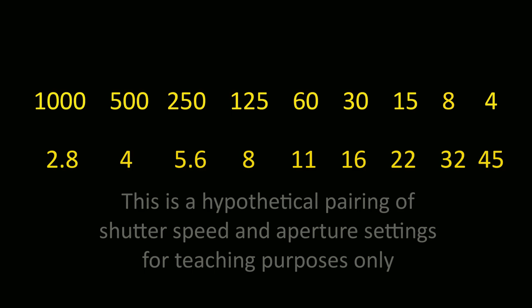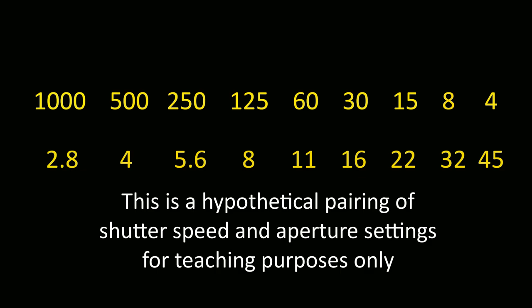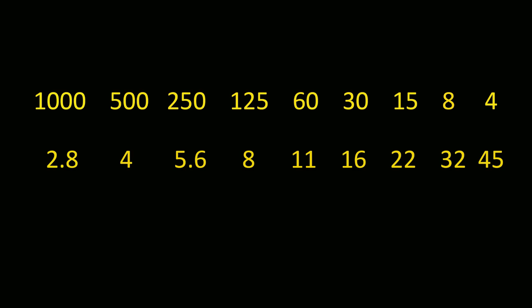Now let's come back to those numbers so I can really prove to you how beautifully these two settings work together. Please be aware that the way I have lined these numbers up is here just for teaching purposes. I'm not saying that every time you're on f2.8 you have to shoot at a thousandth of a second. The actual pairing of settings will change depending on the light you're shooting in. So this screen is there to demonstrate a principle, not to show you the settings you'll be using in the real world.